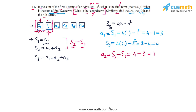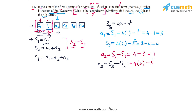Now it says find the third term. To find A3, we use the same idea: find the sum of the first three terms and subtract the sum of the first two terms, leaving just A3. So A3 equals S3 minus S2. S3 equals 4 times 3 minus 3 squared, and S2 we already calculated as 4. So this is 12 minus 9 minus 4, which equals minus 1. The third term is minus 1.